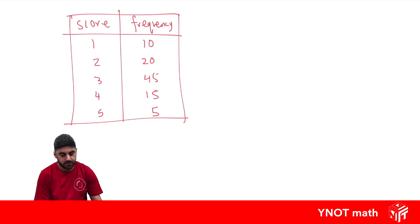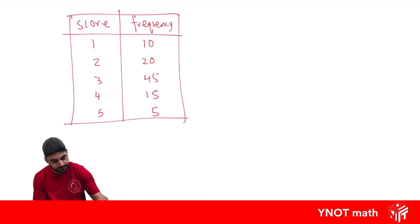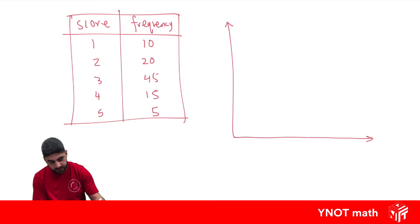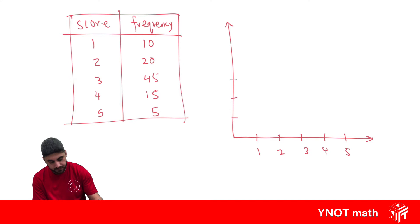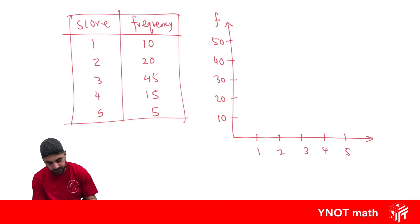How can we draw a frequency histogram? Let's draw that over here. These gaps have to be nice and even for every score we have. You'll be using a ruler, unlike me. We have scores of 1, 2, 3, 4, and 5. Let's come up with a nice scale — our highest frequency is 45, so we only have to go up to 50. This is our frequency, and these are our scores, which we usually call X.